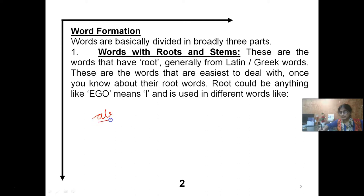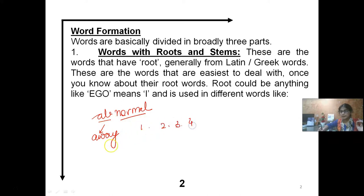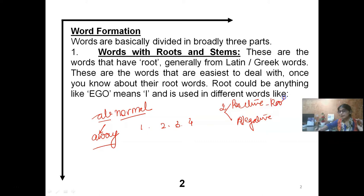AB is a negative word — AB means 'away.' A positive word makes a word positive, and a negative root always gives a negative meaning. AB is a negative root. Abnormal — away from normal. So abnormal means away from normal.